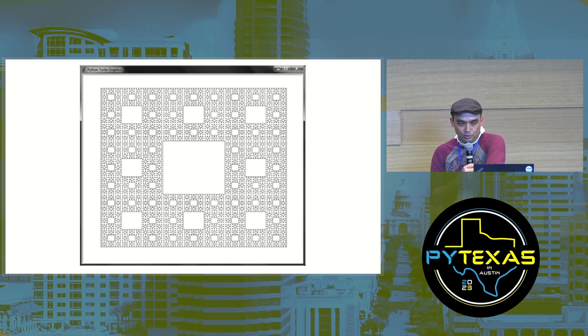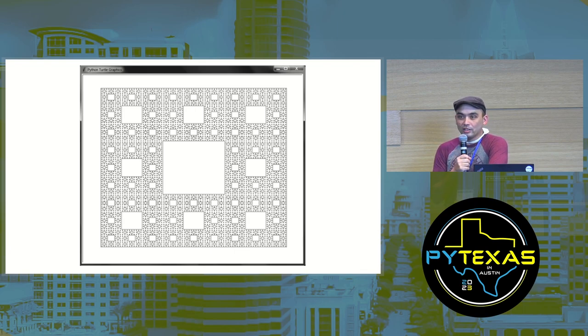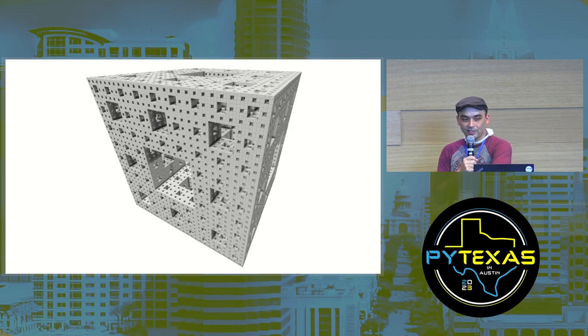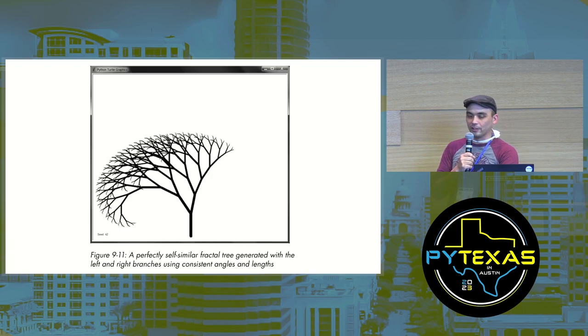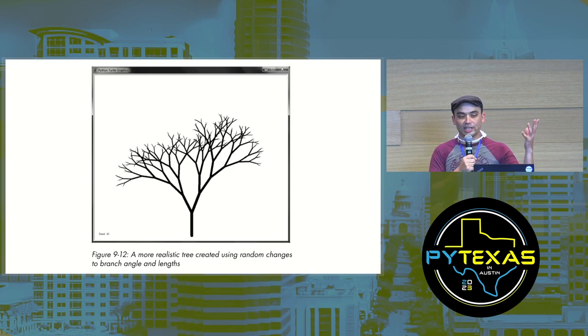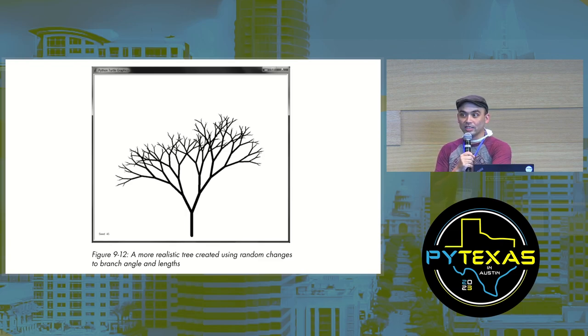My book gives you source code for turtle programs that generate recursive artwork — they're surprisingly short, like 40 lines of code. This is a Sierpinski carpet made of squares within squares. You can also make a 3D version in Minecraft — a Sierpinski cube. You can draw lots of fractals with Python's turtle module. Here's a recursive tree where each branch splits into two self-similar branches. If we make branches sprout randomly, we get a much more natural-looking tree.